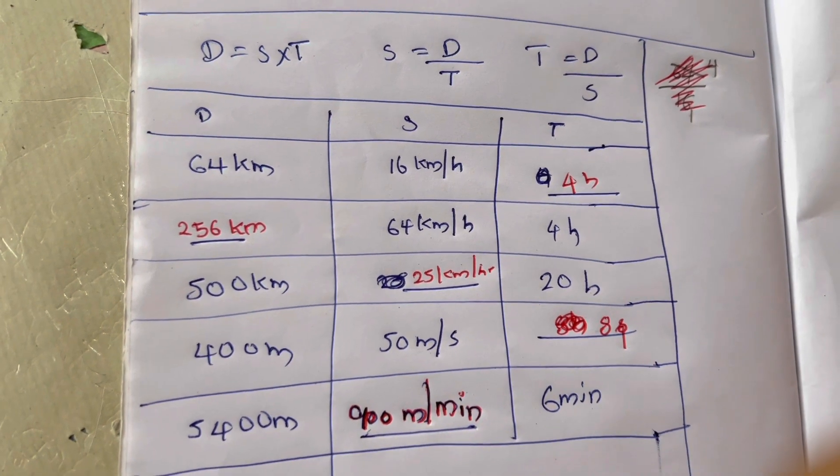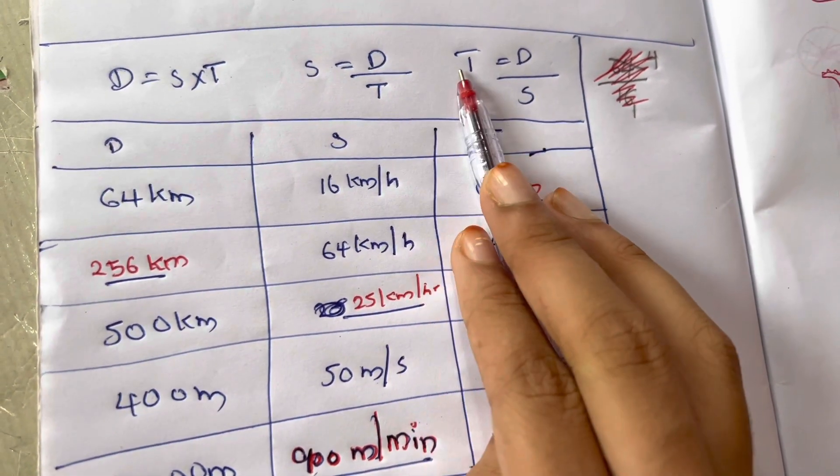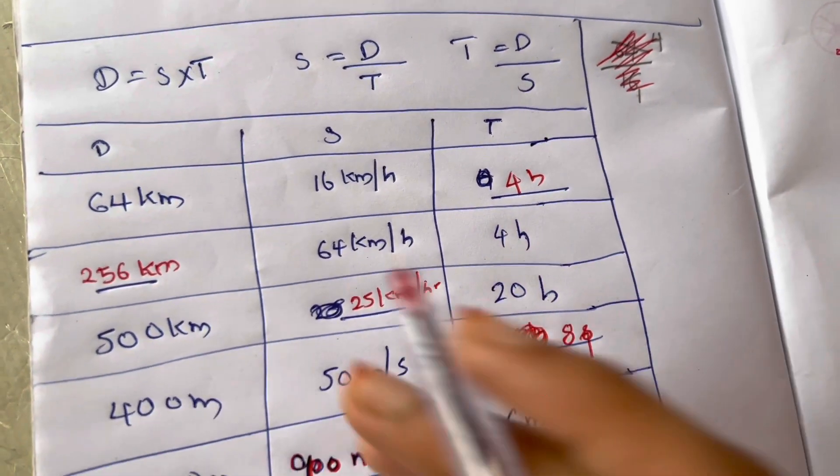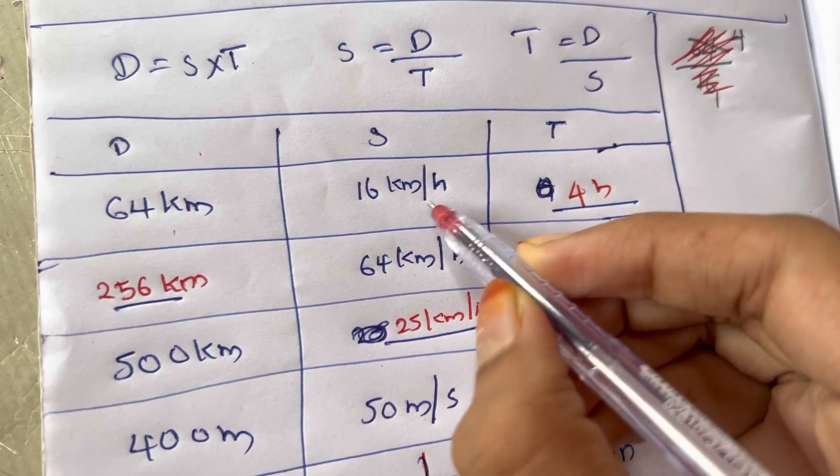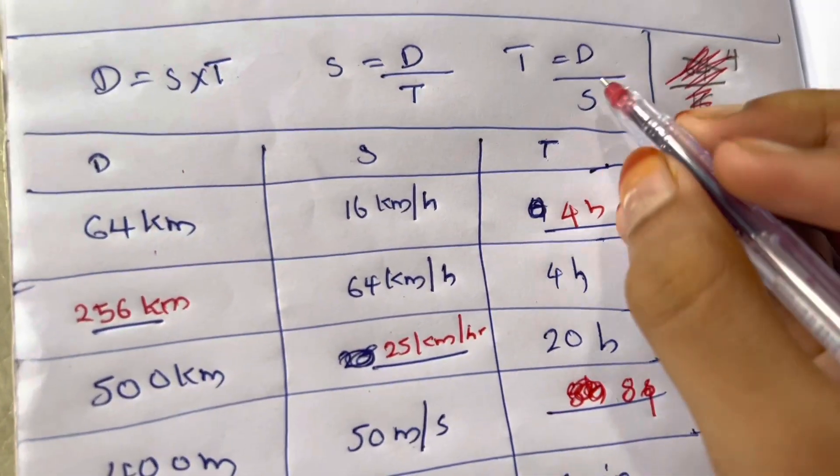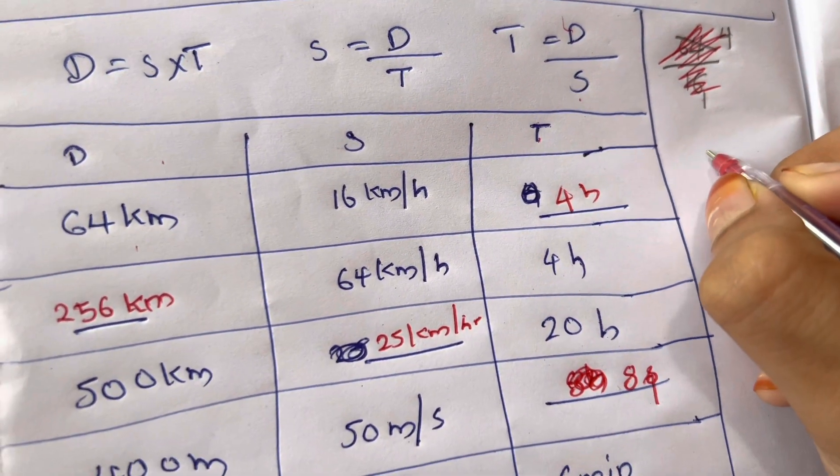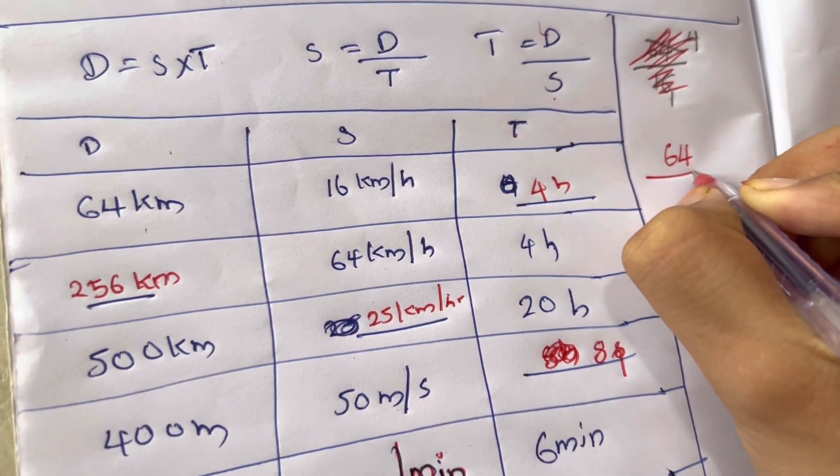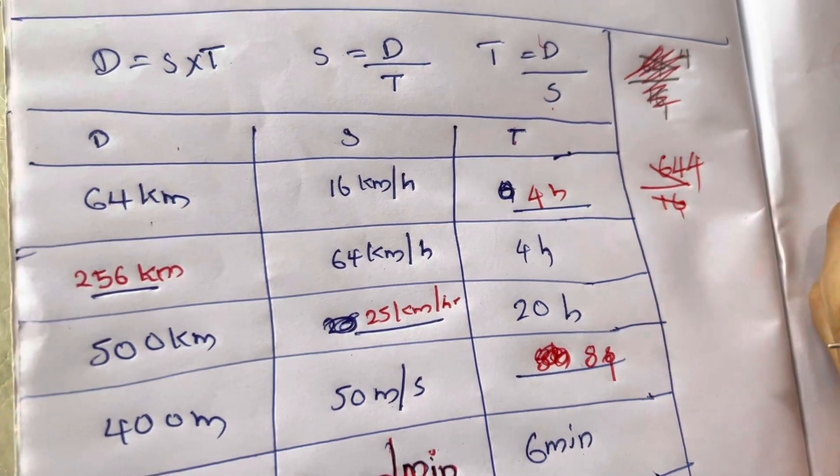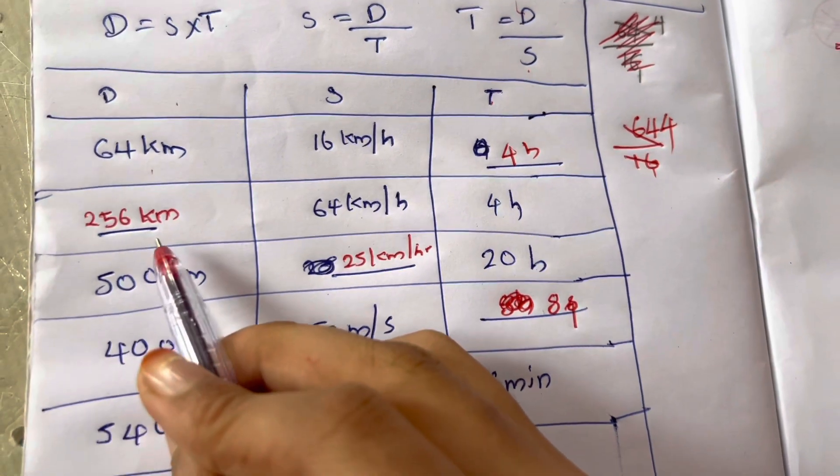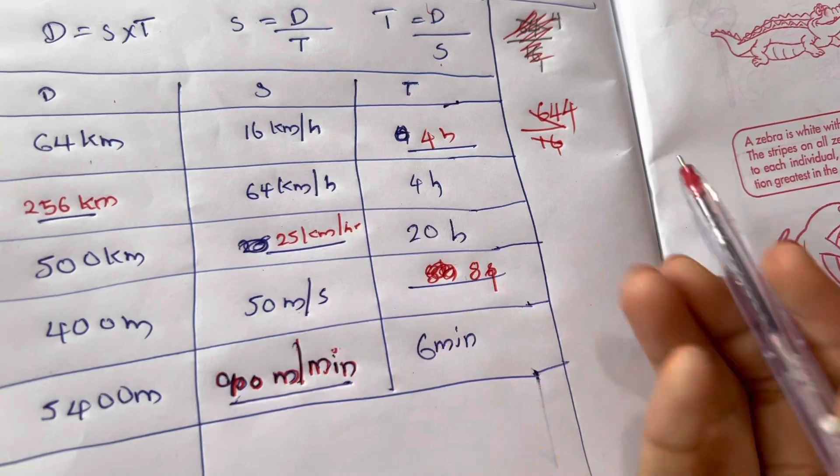Distance divided by speed equals time. Speed divided by time. Distance is 24 km, speed is 16 km per hour. Distance by speed equals time.